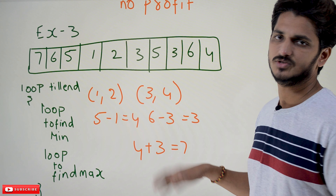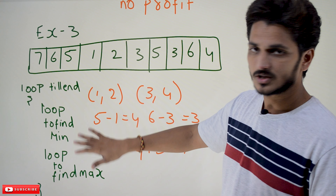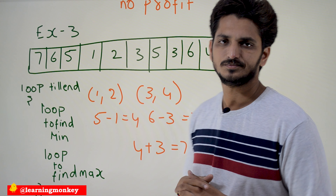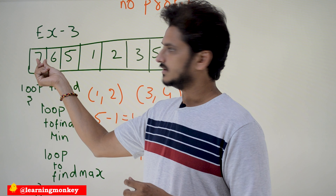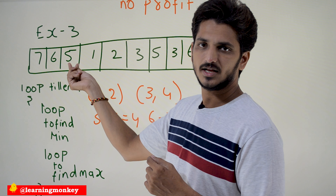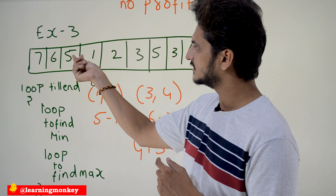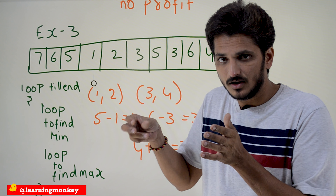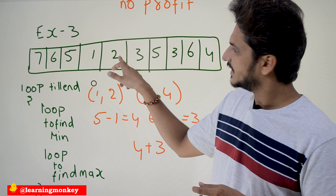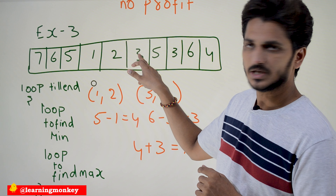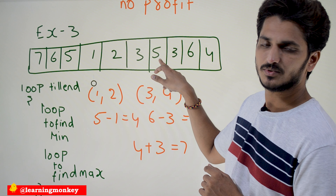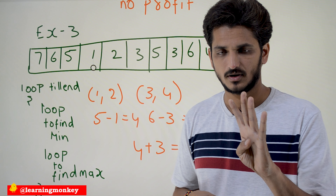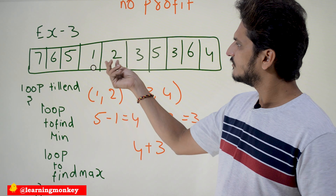With a third example we'll understand the logic. We won't go step by step through the code — we'll explain the logic and you try to solve it on your own. Take the example array: [7,6,5,1,2,3,5,3,6,4]. If you want to buy on the first day, the next day it's less — don't buy. Keep checking until the next day is higher. So the logic is: identify the minimum value first.